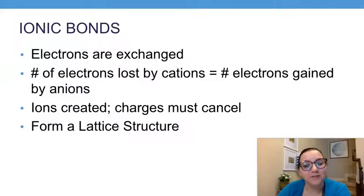So let's start off here with ionic bonds. In this type, electrons are exchanged between one substance and another. One substance would lose electrons while the other one gains those electrons. When that happens, we end up forming ions.